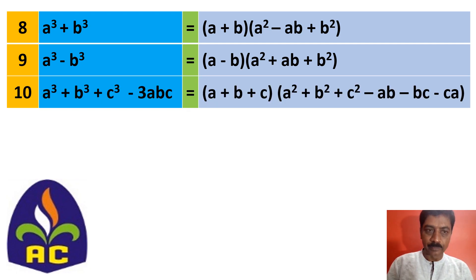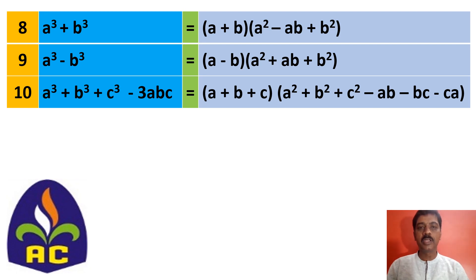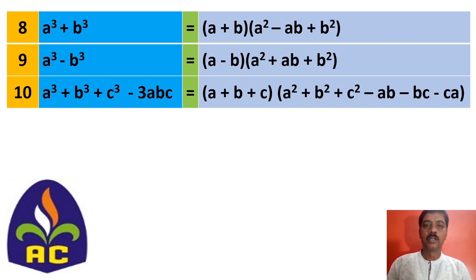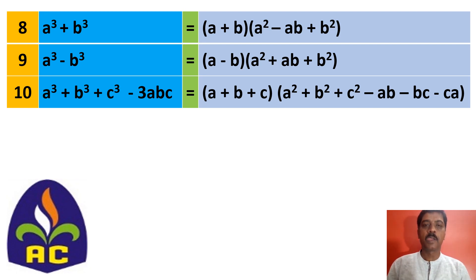Here is the tenth identity: a cubed plus b cubed plus c cubed minus 3abc, expanded and written as a plus b plus c into a squared plus b squared plus c squared minus ab minus bc minus ca.